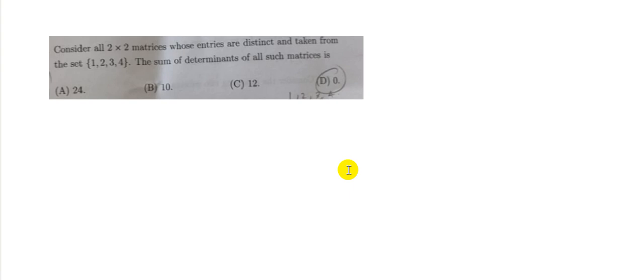The next question is consider all 2 by 2 matrices whose entries are distinct and taken from the set 1, 2, 3, 4, then the sum of the determinants of all such matrices is what? Now if I take this in general, so if I have 4 distinct numbers ABCD then the determinant of this would be AD minus BC, but if I interchange the diagonals, that means if I make this as BC and AD, I just swap the diagonals, then it becomes BC minus AD. Now if I add these two up this comes to 0, so that means for any two pairs if I just swap the diagonals it becomes 0.